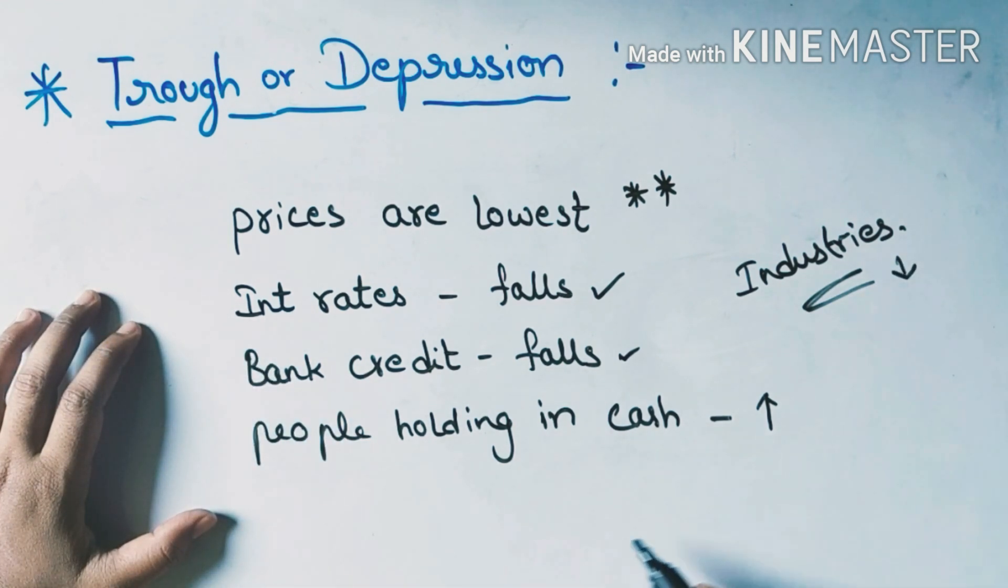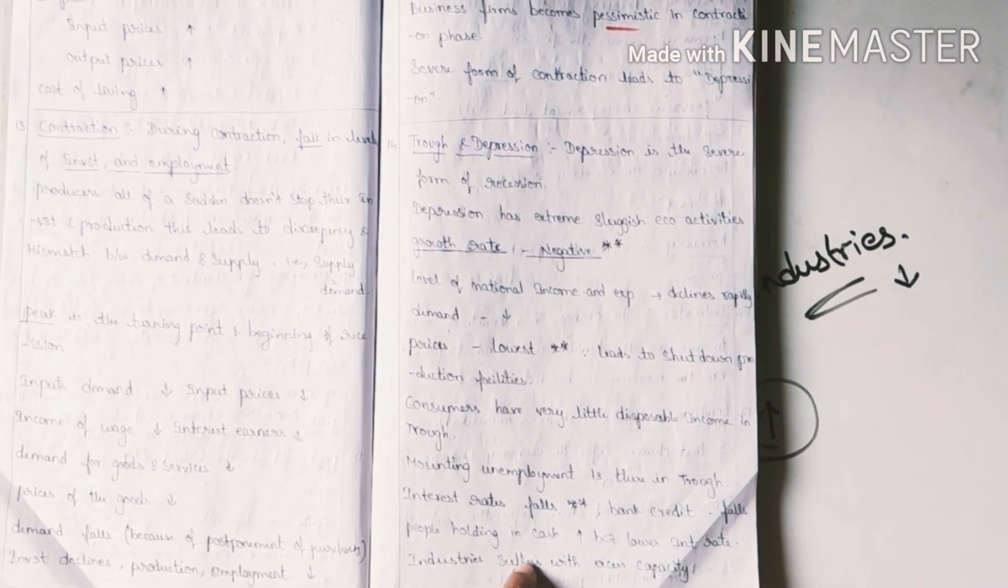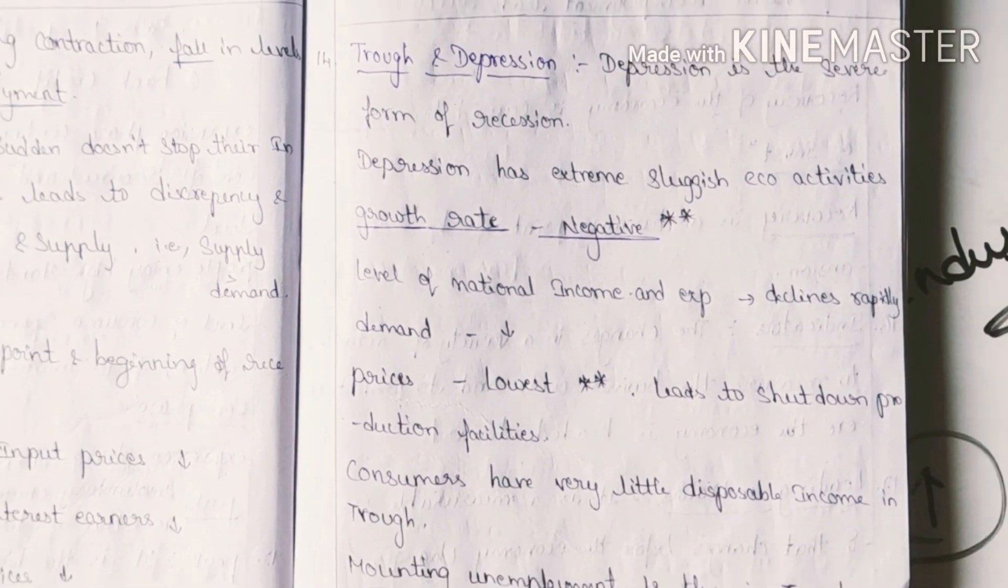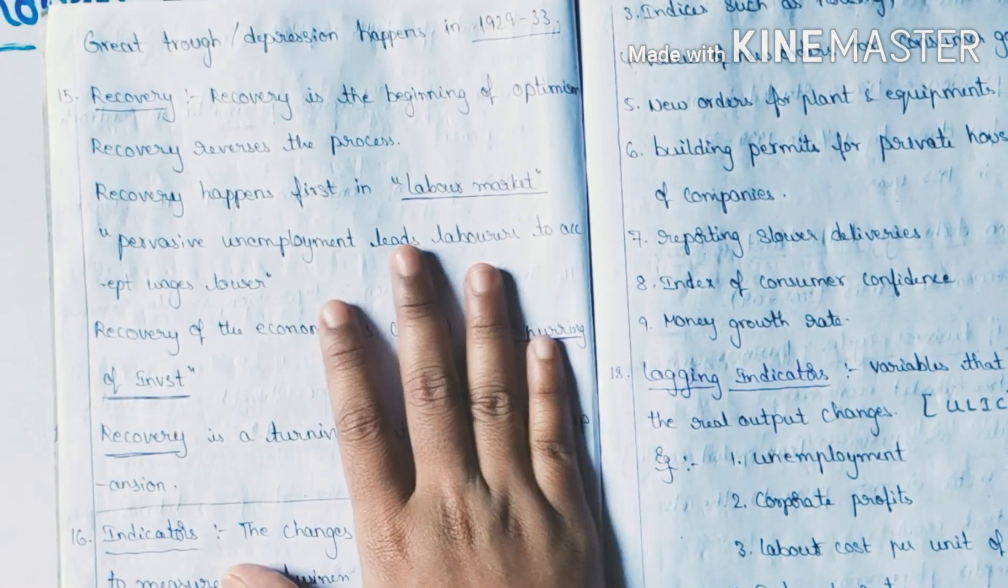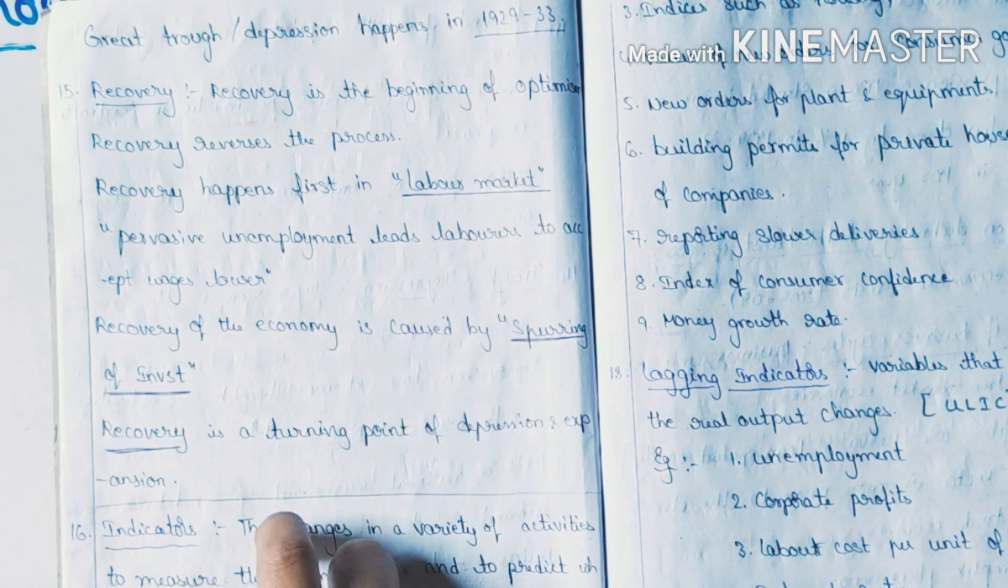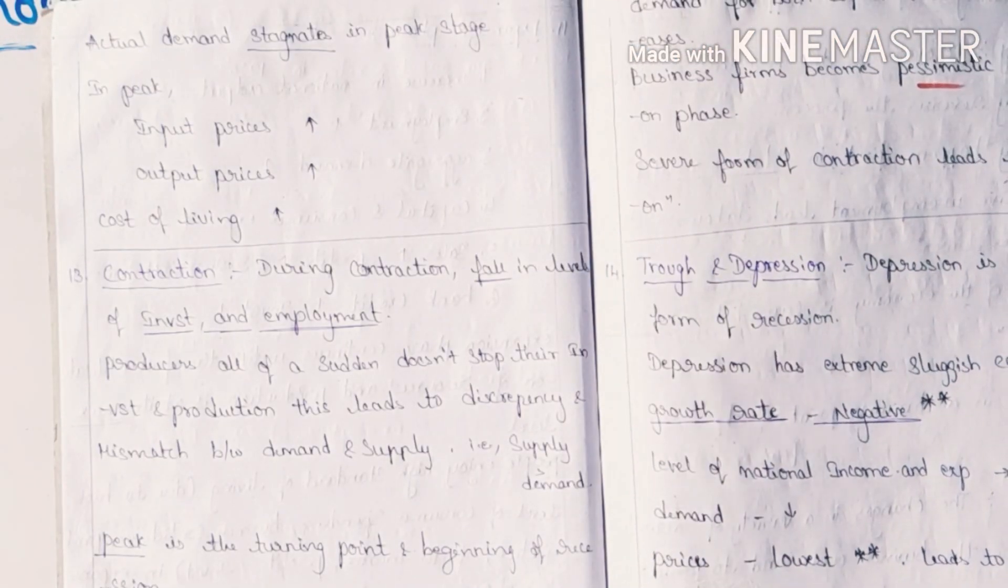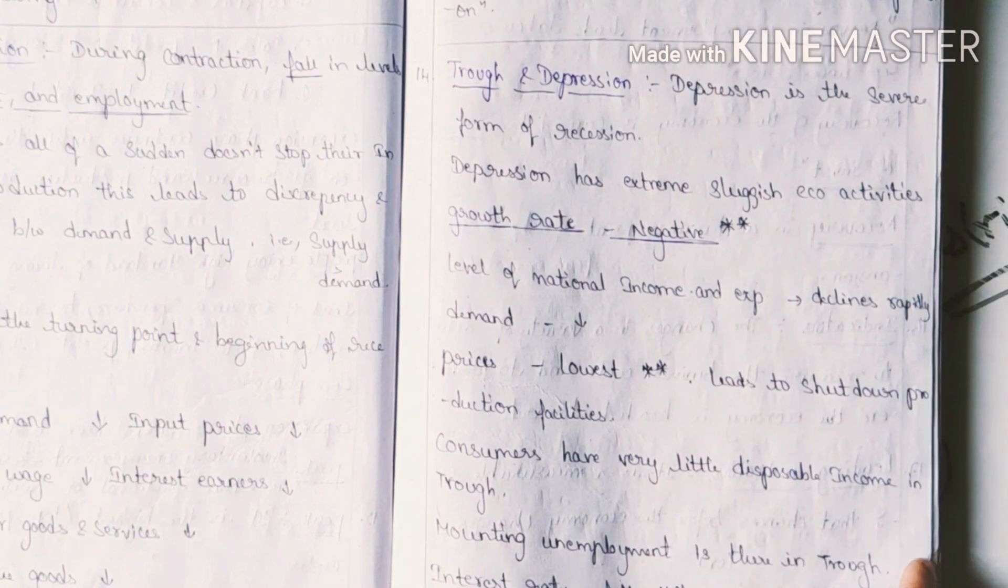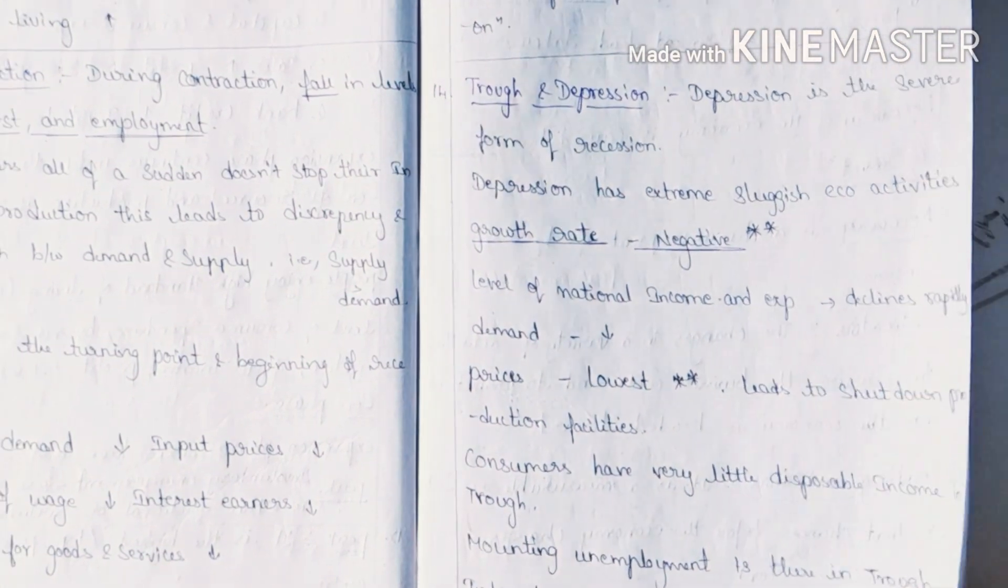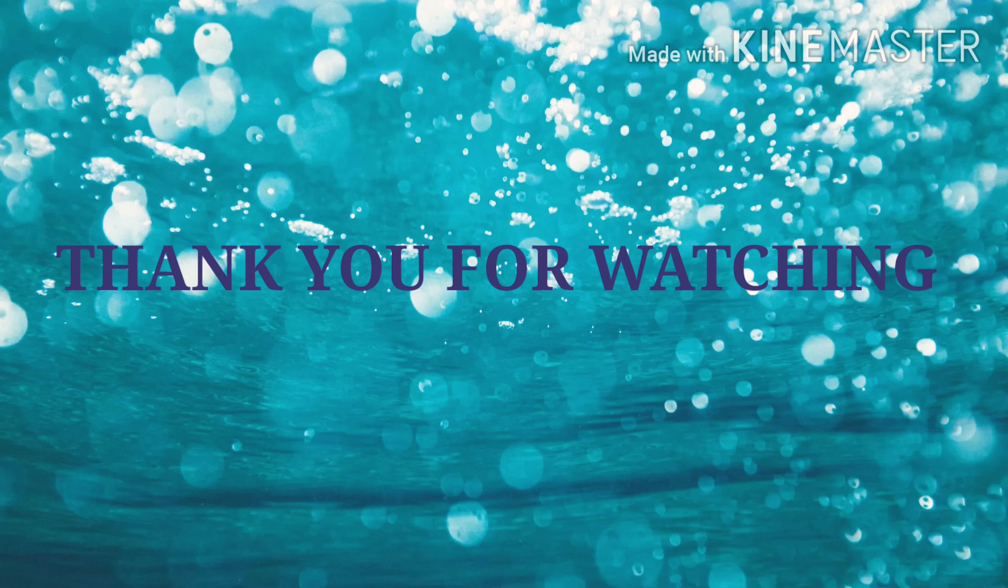Industries start to shut down. People holding cash increases. I have already written notes in the description box. Download it. If you download the PDF, let me know in the comment section. Check the description box.